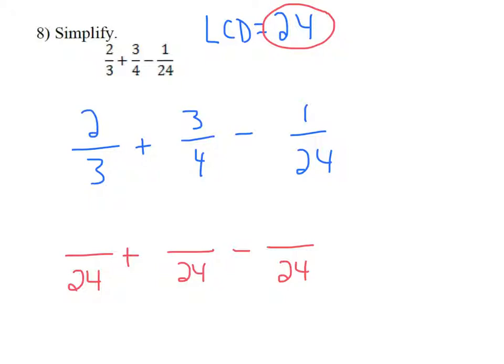What do you need to multiply 3 by to get 24? 8. 3 times 8 is 24. Whatever you do in the denominator, you must also do in the numerator. So my new numerator is 2 times 8, or 16, for the first fraction.